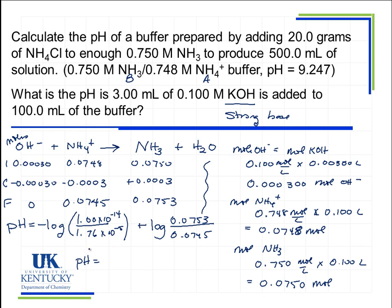This will give a pH equal to, this first term equals 9.246, plus the second term, which is 0.0046, for a final pH to three decimal places of 9.250.